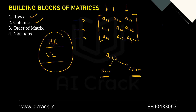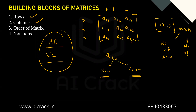Now let's talk about the order of a matrix. We define it as m×n, where m represents the number of rows and n represents the number of columns. So the order is written as number of rows cross number of columns. The notation i and j represent row and column respectively.